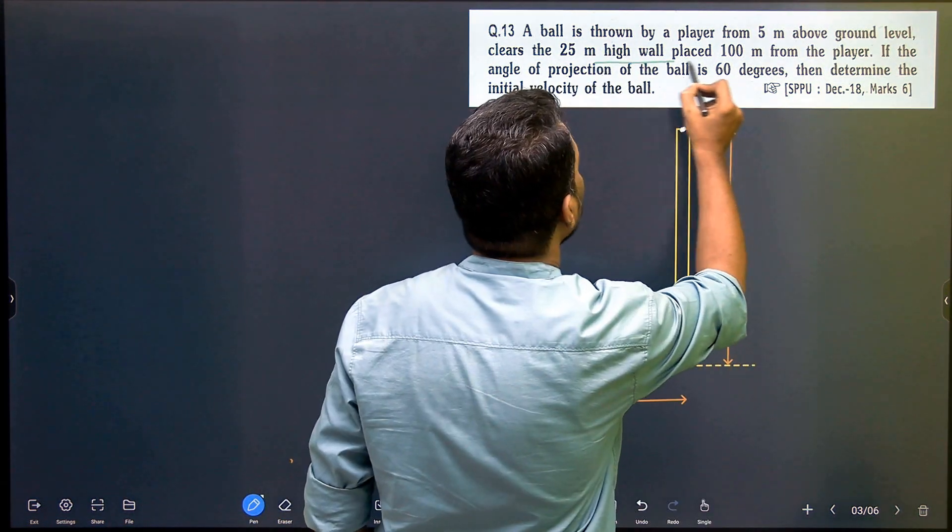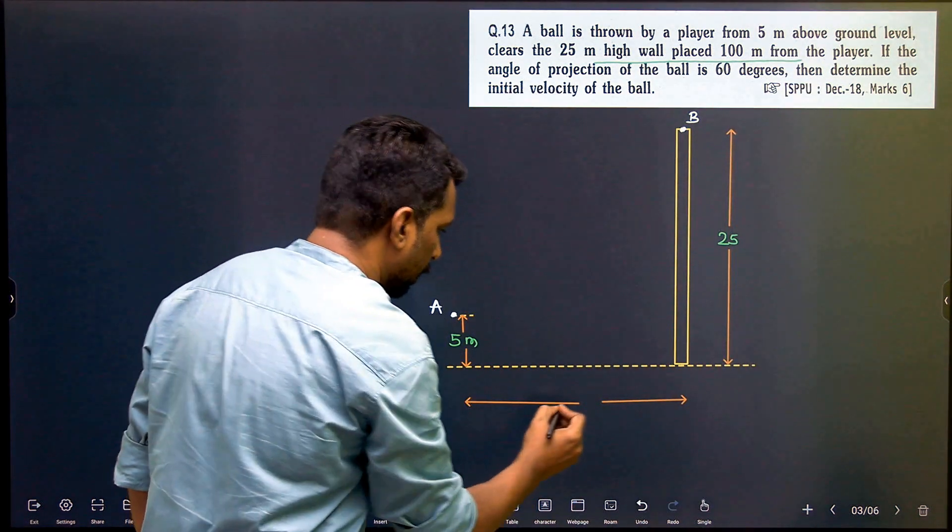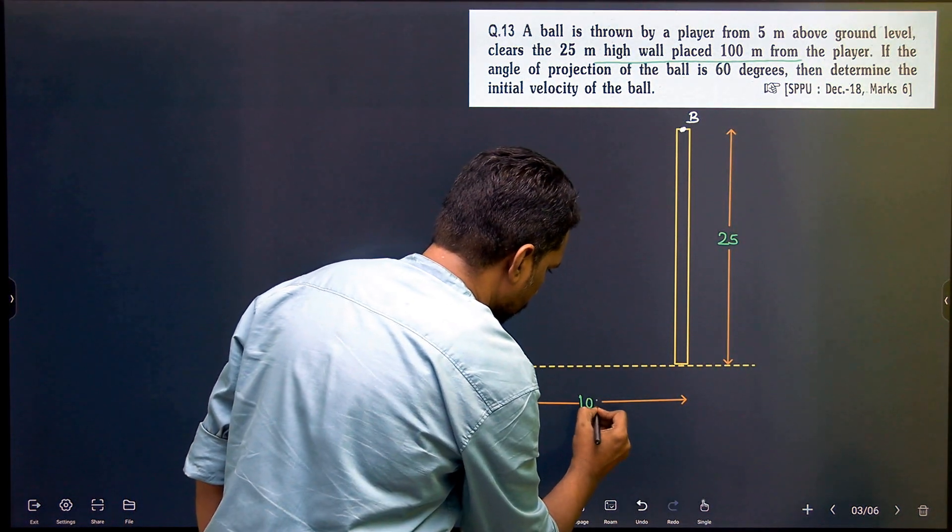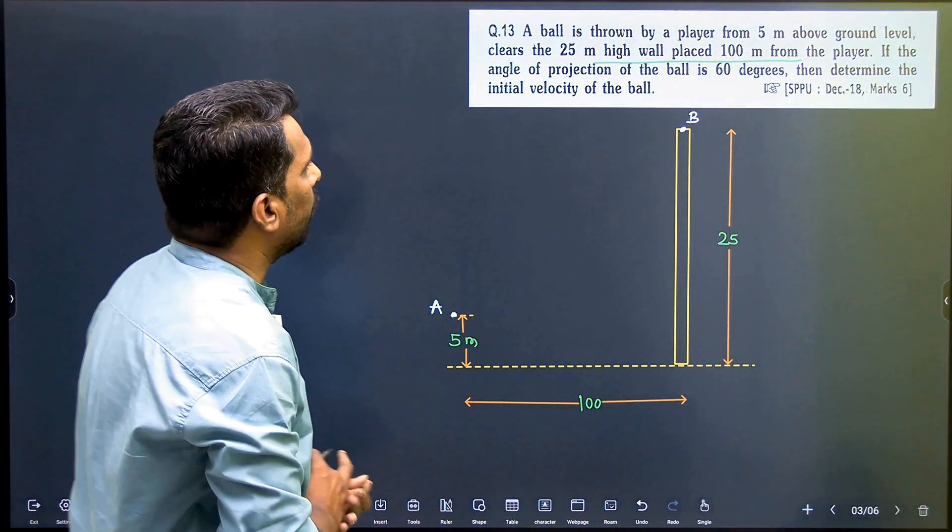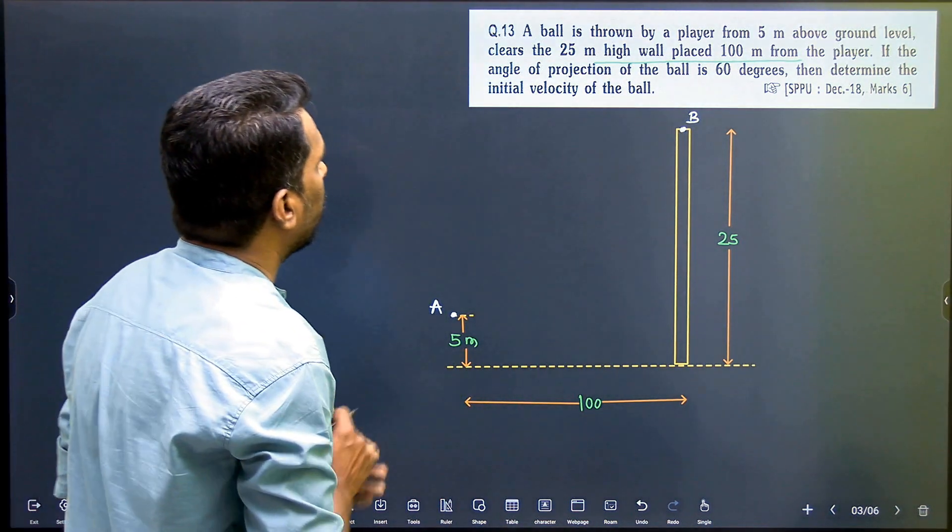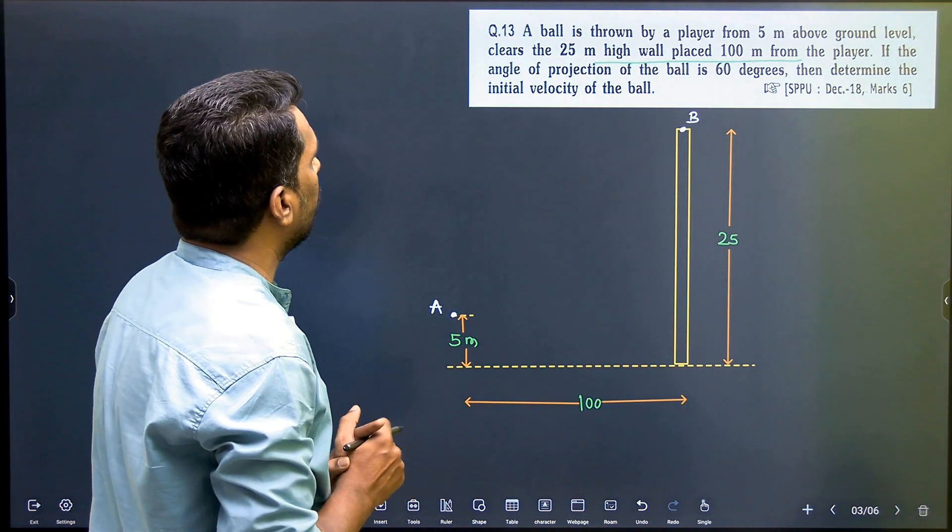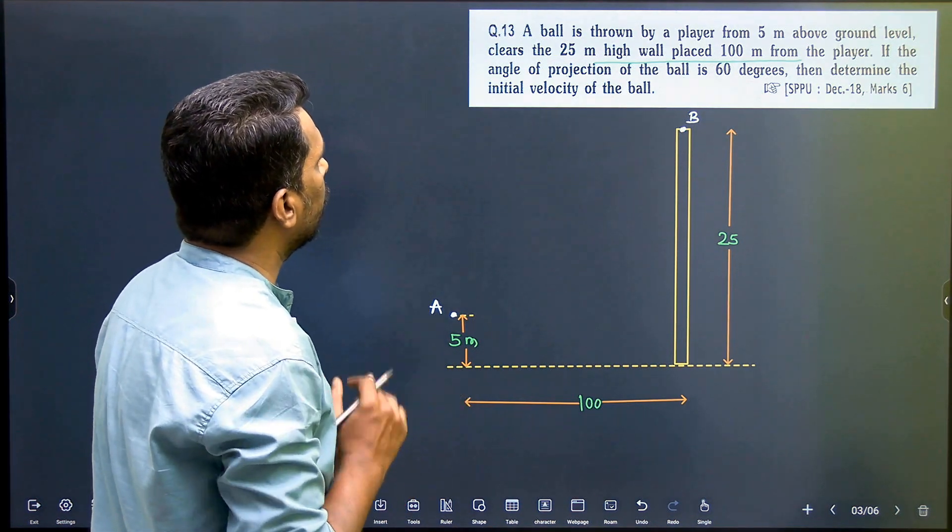The high wall is placed 100 meters from the player. This is 100, this is 5 meters, and this is 25 meters. If the angle of projection of the ball is 60 degrees, then determine the initial velocity of the ball.